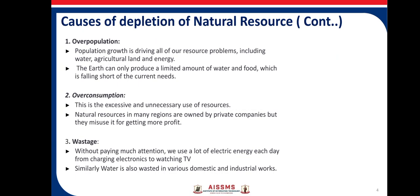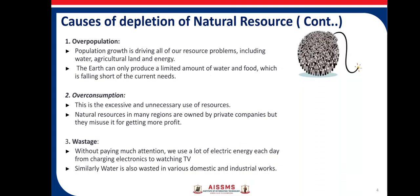Now, the causes of deflection of natural resources. The first and most important cause is overpopulation. Our country is among the top countries in terms of population in the world. Population growth is driving all of our resource problems, including water, agriculture, land, and energy. The earth can only produce a limited amount of water and food, which is falling short of current need.